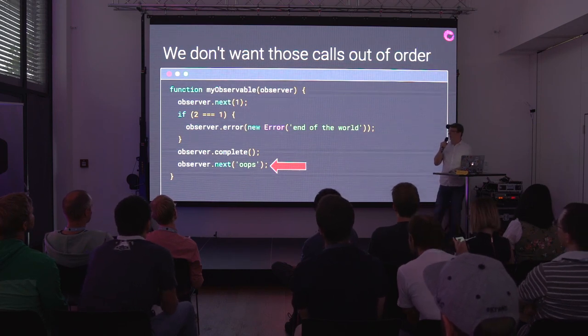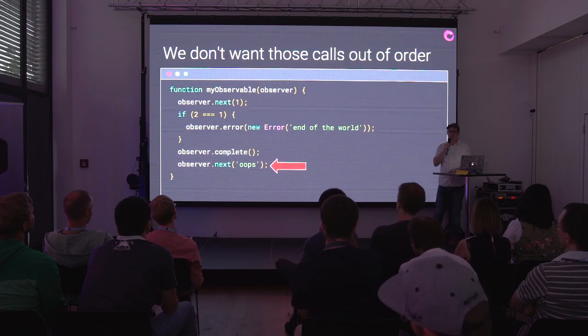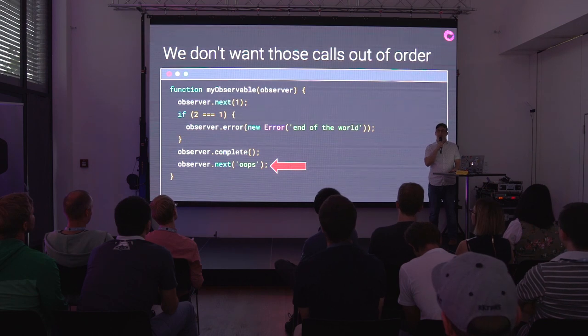For example, if I don't want to be able to call next after I call complete — if I say 'I'm done sending you data' and then 'just kidding, here's some more data,' that's not very good. Our teardown might not return a teardown function, so we need to check that with an if statement: did you really give me a teardown?